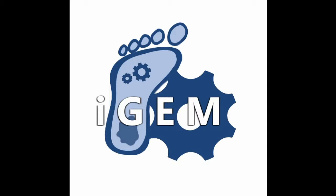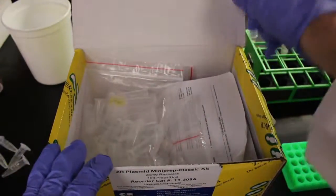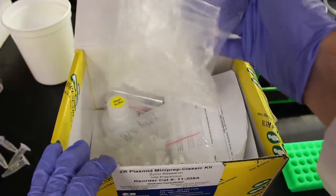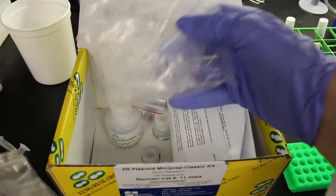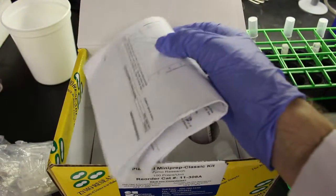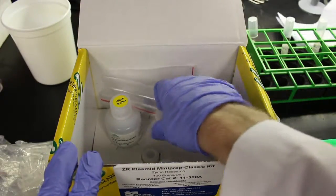These plasmids can be used later for 3A assembly. You will normally use this Zymo mini prep kit to extract plasmids from overnight liquid cultures. Formally, this kit is known as the ZR Plasmid Mini Prep Kit Classic by Zymo Research Company.